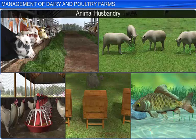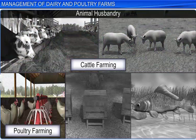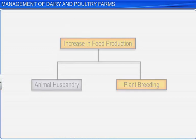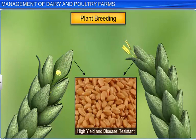Animal husbandry refers to the practice of breeding and rearing livestock that are useful to human beings, and includes cattle or dairy farming, poultry farming, beekeeping, and fisheries. Plant breeding refers to the manipulation of plant species to create desired plant types that are better suited to cultivation, giving better yields, and that are disease resistant.